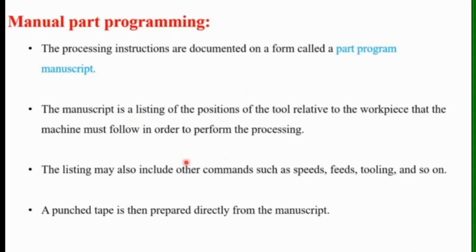The manuscript is a listing of the positions of the tool relative to the workpiece, which the machine must follow in order to perform the operation. The listing may also include other commands such as speed, feed, depth of cut, tooling, etc. This manuscript is used to prepare the punched tape directly.